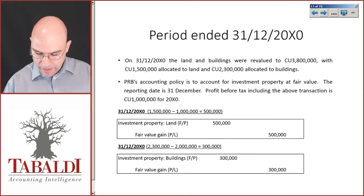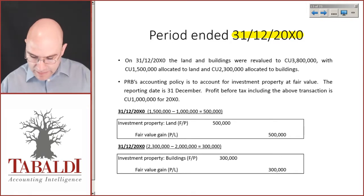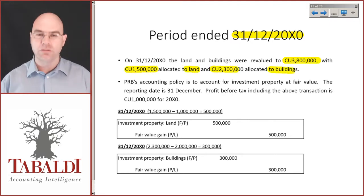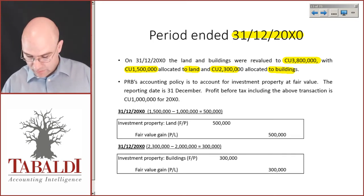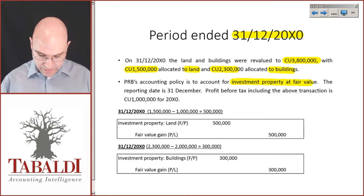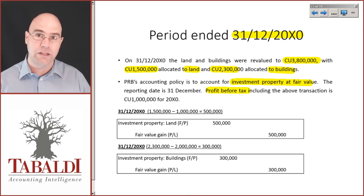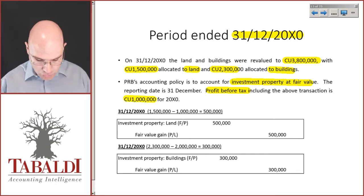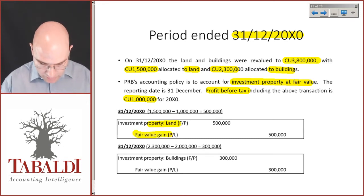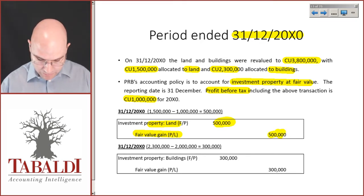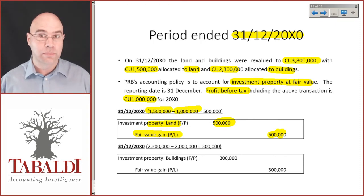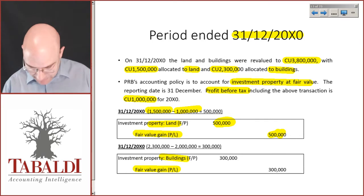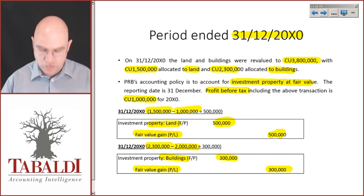For the period ended 31 December 20x0, the land and buildings were revalued to 3.8 million, with 1.5 million allocated to land and 2.3 million to buildings. The accounting policy is to fair value investment property through profit or loss. The reporting date is 31 December. Profit before tax including the fair value gain is 1 million. The journals passed: debit investment property land, credit fair value gain in P&L for 500,000 (being 1.5 minus 1 million); debit buildings, credit fair value gain P&L for 300,000 (being 2.3 minus 2 million).